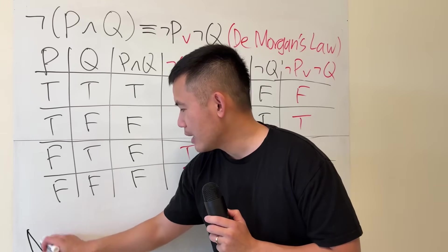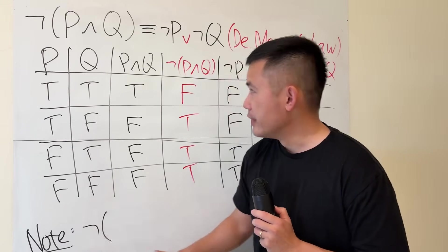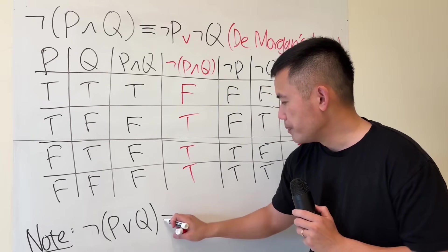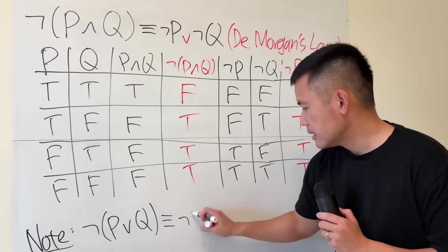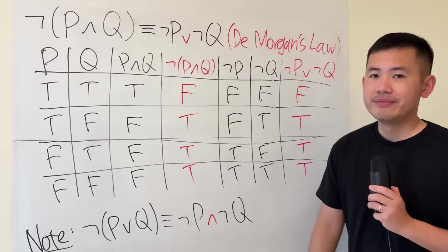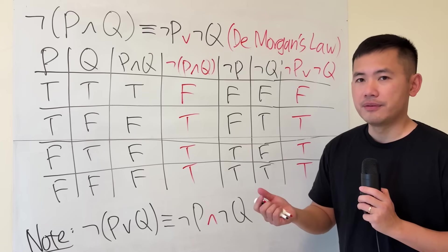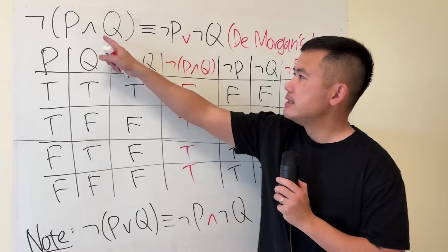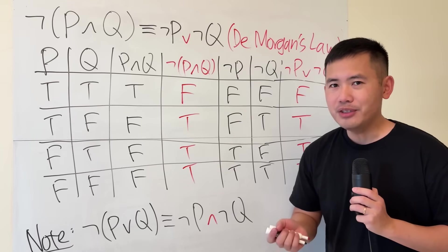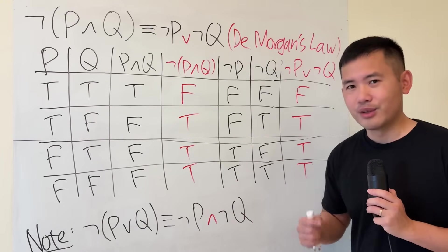Note: if you're trying to distribute a NOT and the inside is P or Q, this will become not P AND not Q — you change the OR to an AND. Besides AND and OR, there's also an implication. So how do we distribute a NOT over an implication?